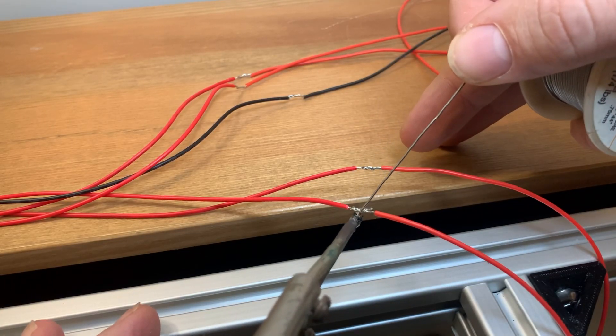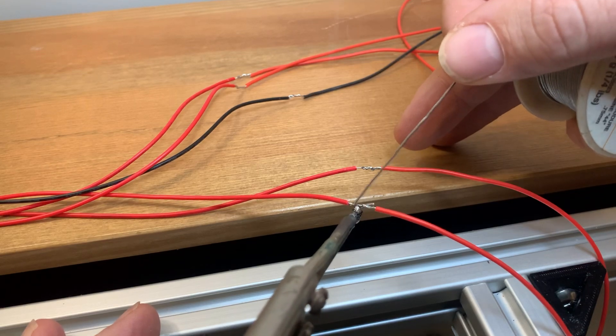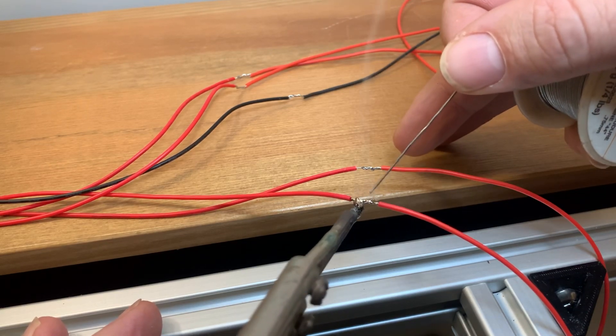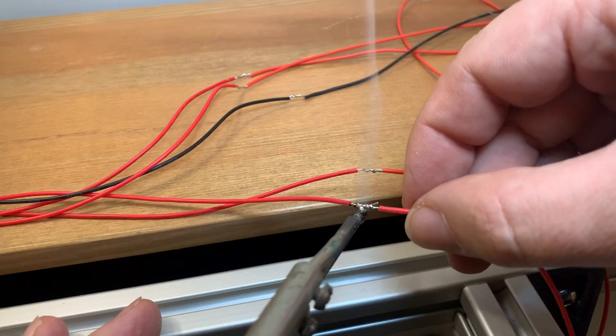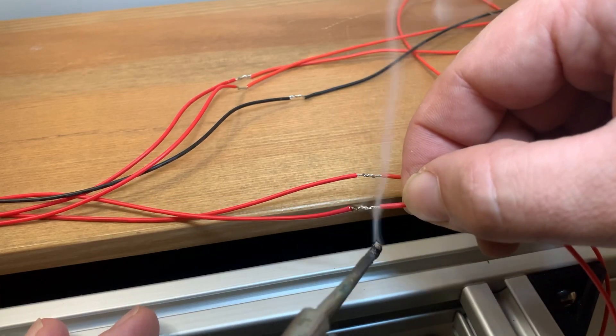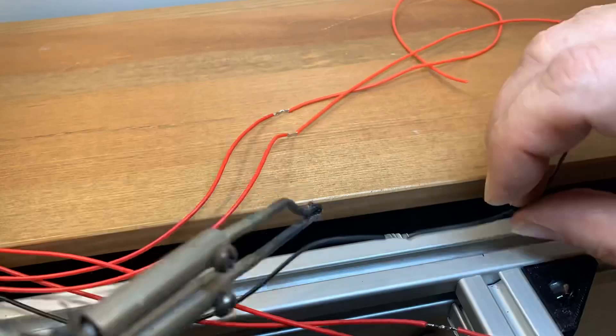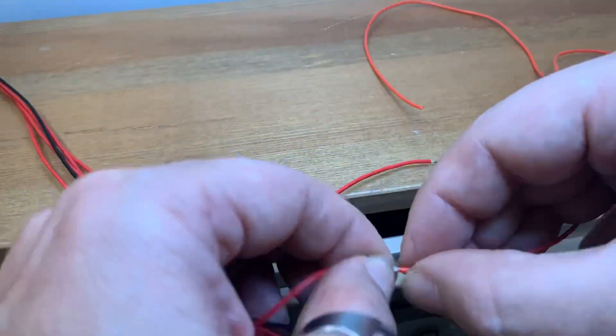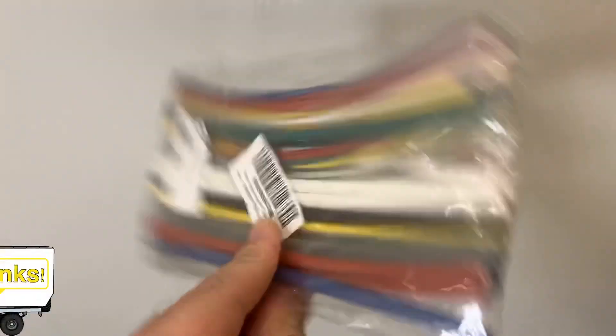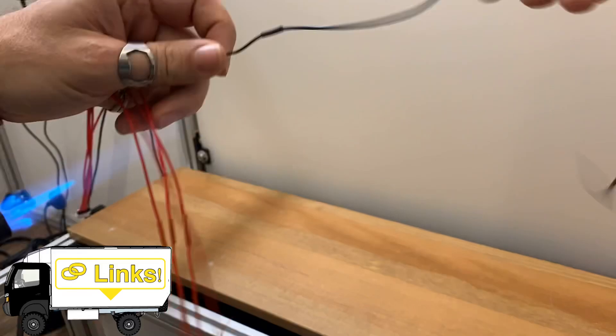The key to a good solder joint is to make sure you heat the wires and use the heat in the wires to melt the solder, not melting the solder on the soldering iron and hoping that it flows into the wire. That can lead to a cold solder joint which will add resistance to your connection, which is not a good thing when you're trying to sense voltage. Lastly to protect the joint we need some heat shrink, and with the careful application of a way too big flame, we're done.